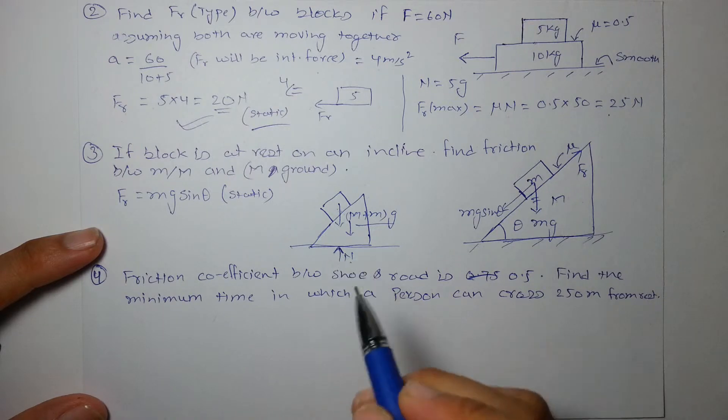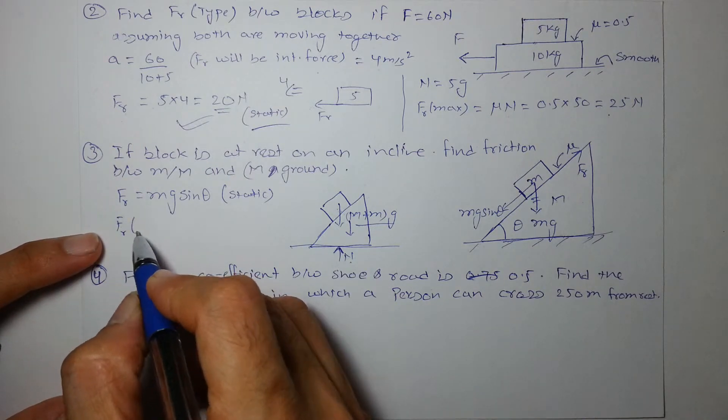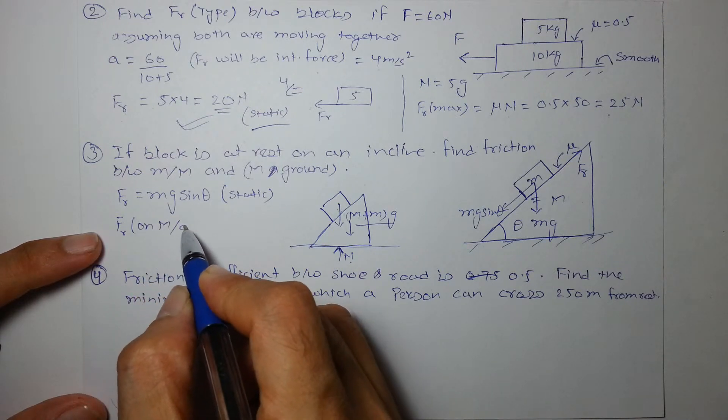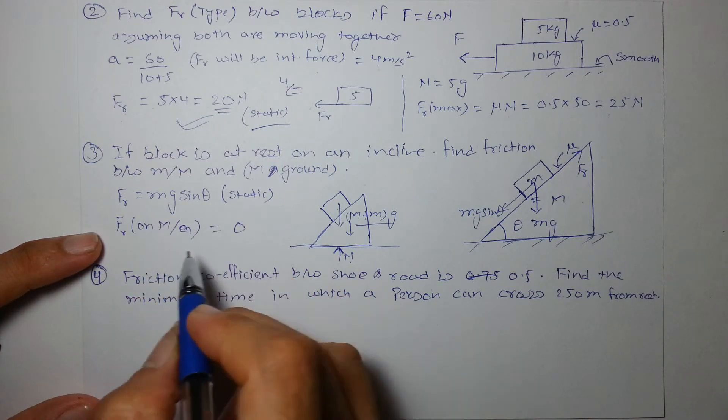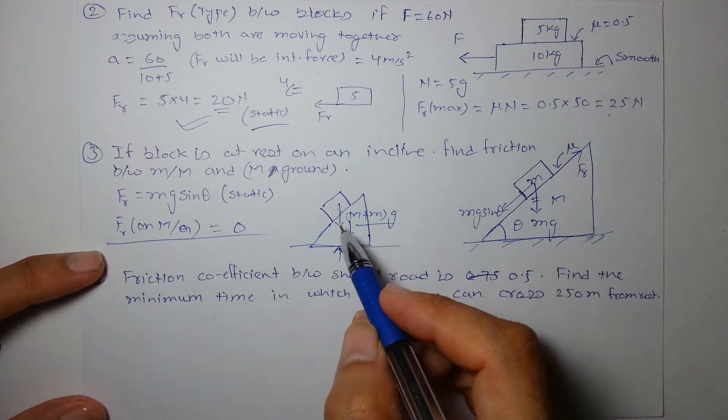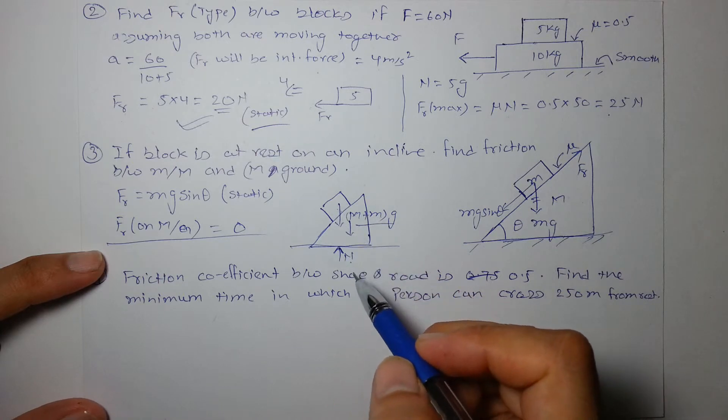So on this diagram I will just show vertical forces which are Mg and another vertical force which is normal from the ground. So friction on capital M by ground is nothing but 0 because it has no tendency to slide down. There is no external force on the system.